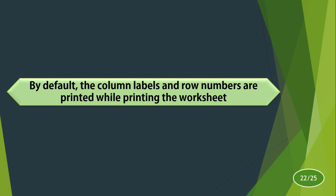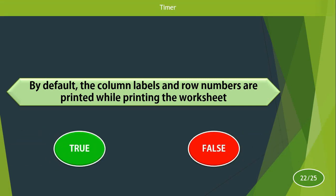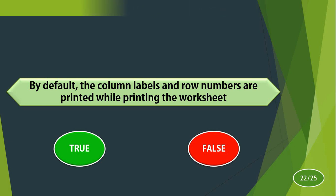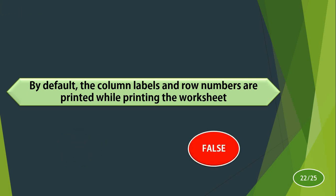By default, the column labels and row numbers are printed while printing the worksheet. True or false? The answer is false. But you can make them print by selecting the option Print Headings. By default, column labels and row numbers will not be printed. So the answer is false.